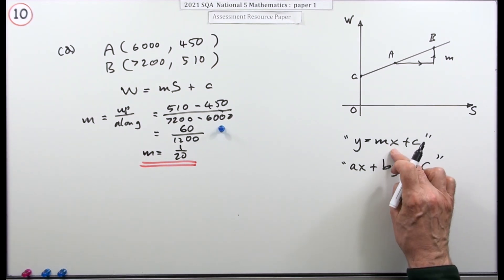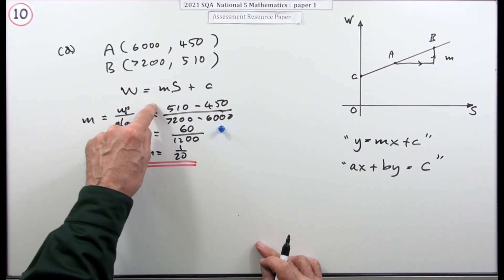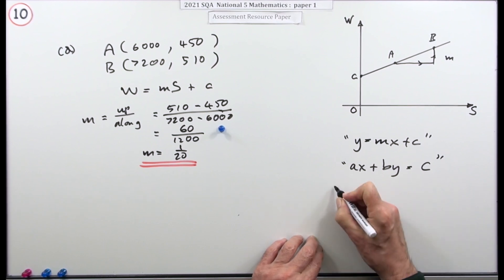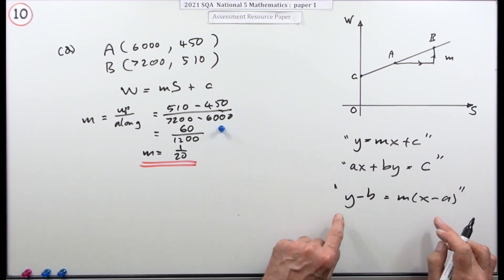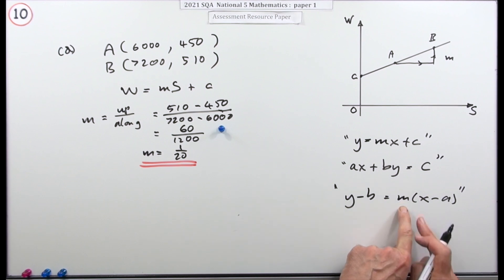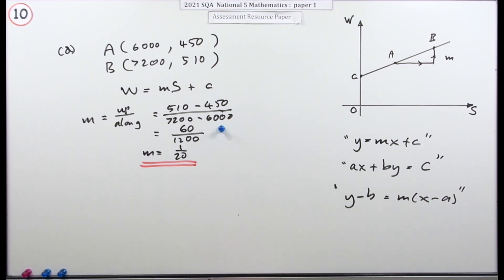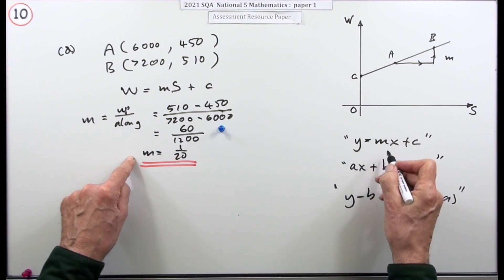Now you can either feed the gradient into w equals ms plus c, or you could use the other form — y minus b equals m times (x minus a) — just with w's and s's instead of y's and x's. There are two ways to do this. I'll do the first one since I wrote it first.